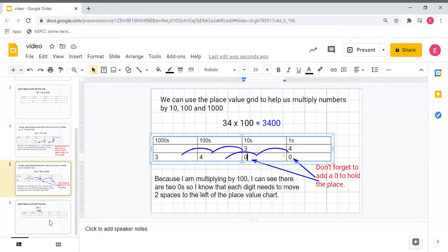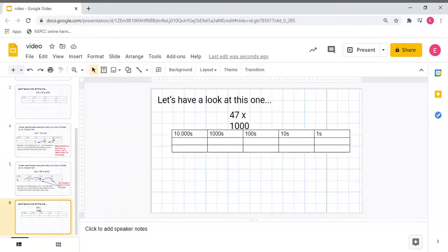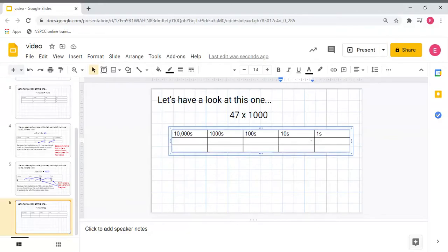Lastly, let's have a look at multiplying by 1,000. So I've got 47 times by 1,000. I know I've got four tens and seven ones.